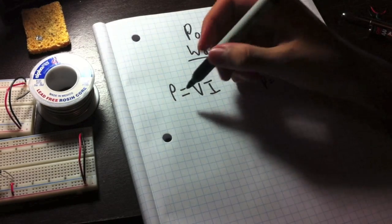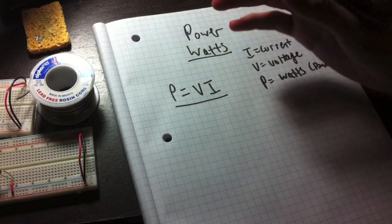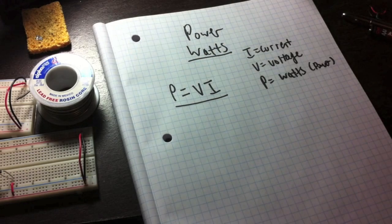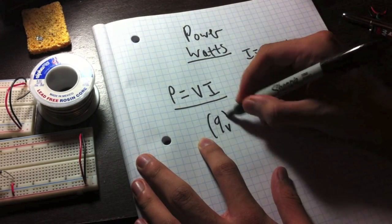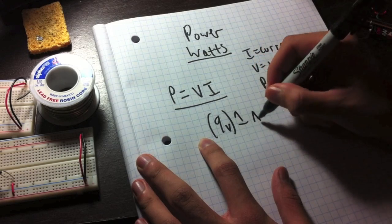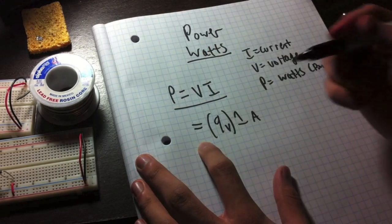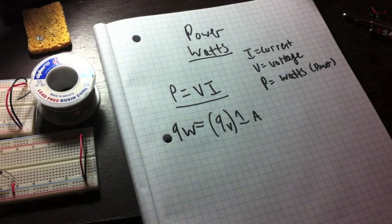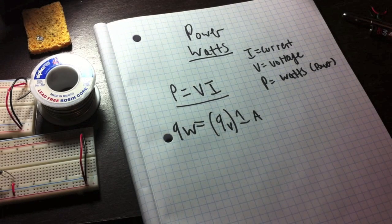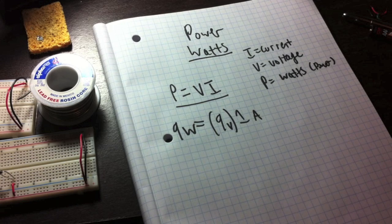All right, this is the formula. P equals VI. Power, or watts, equals voltage times current. So if you know you have a 9-volt battery and you have 1 amp running through it, then you have 9 watts. Really simple. So this is probably the simplest way. So a watt is the actual power you're getting out of it.